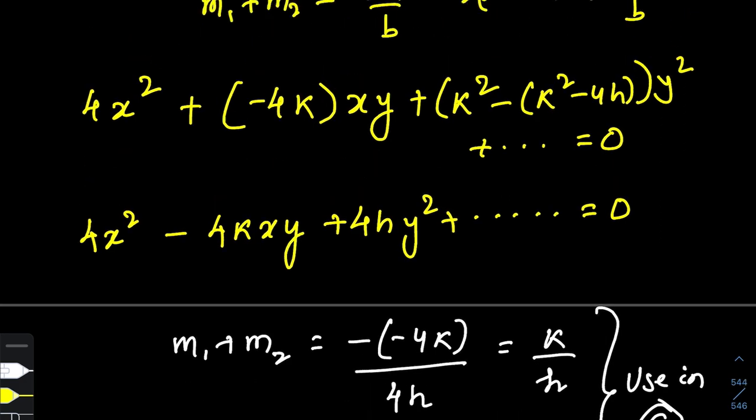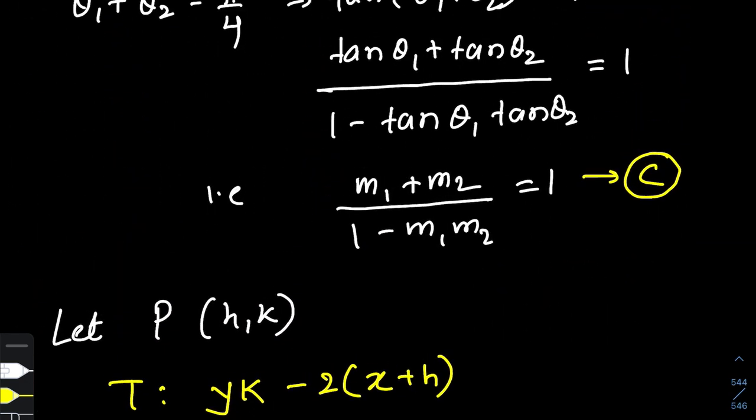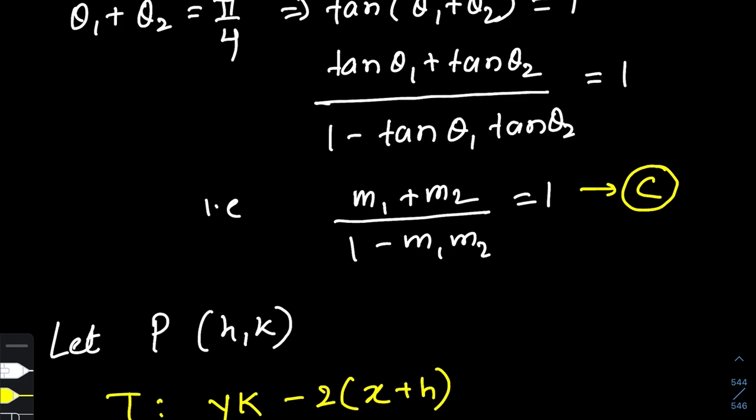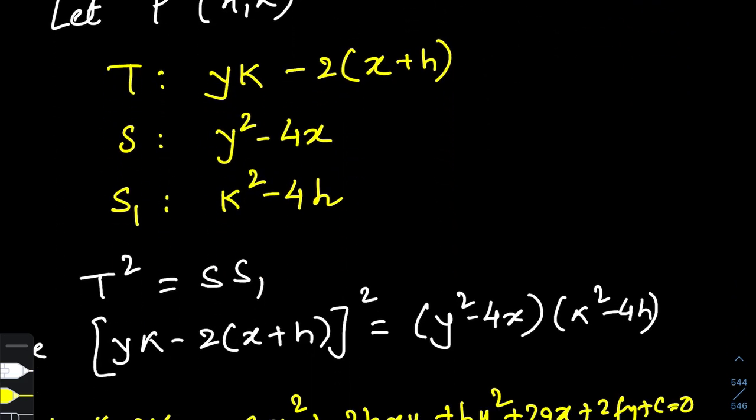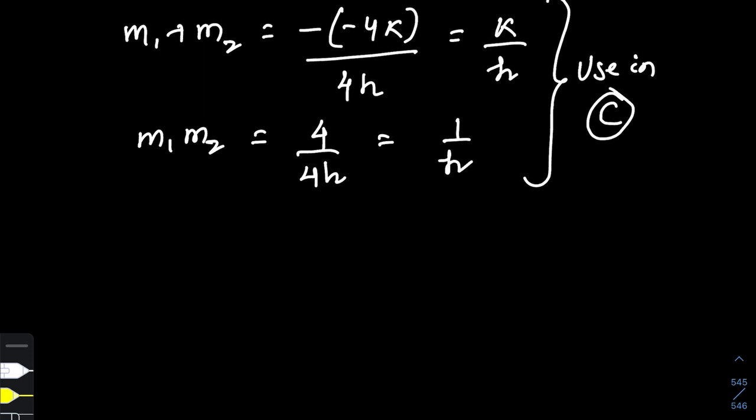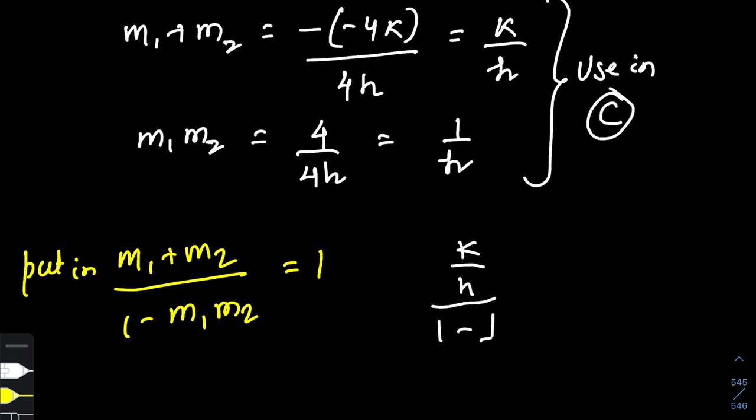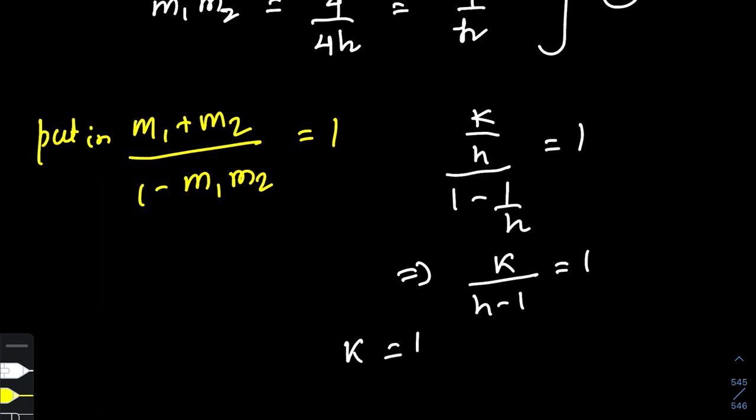Let us use these in our condition C. Putting this in the condition, we get (k/h)/(1 - 1/h) = 1, which on simplification becomes k/(h - 1) = 1, which means k = h - 1, or h - k - 1 = 0.